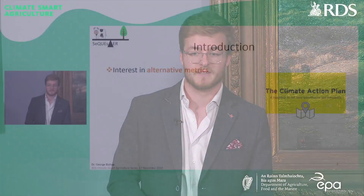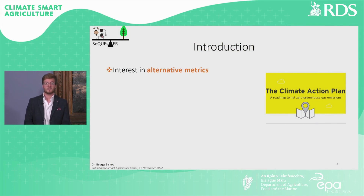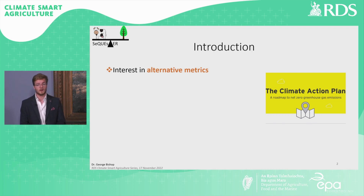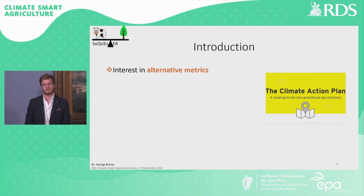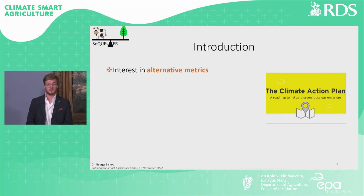To fulfil national commitments of net zero greenhouse gas emissions by 2050, Irish policy makers are going to have to make difficult decisions that will transform the agricultural sector. Given the prominence of methane within the national emissions profile, measured on a 100-year global warming potential basis as per the national inventory reporting methodology, there has been considerable interest to look at alternative metrics that deal with methane.